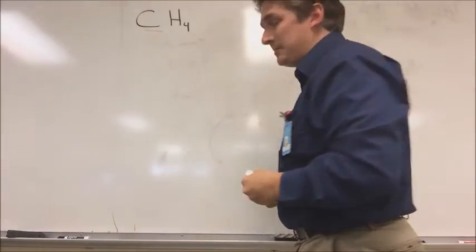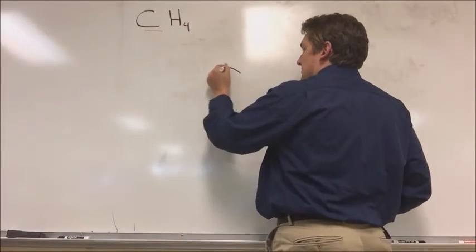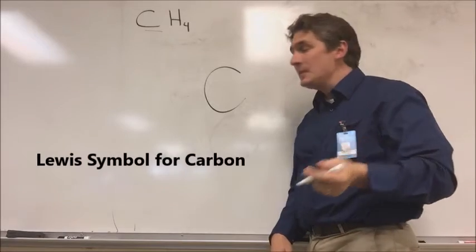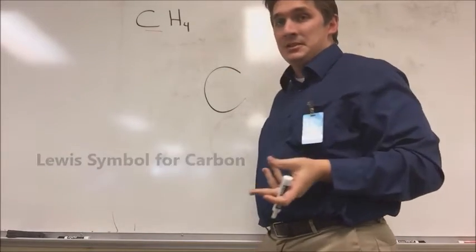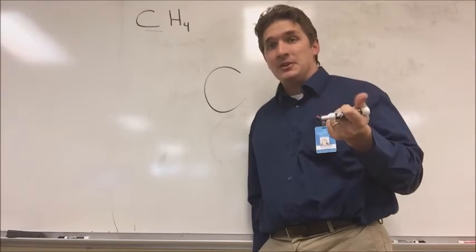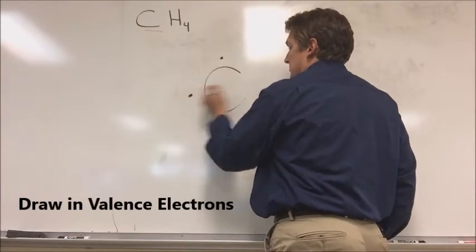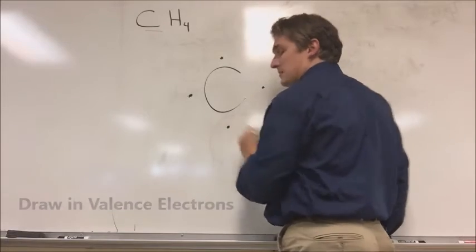Now we draw a Lewis structure. We're going to draw it out by drawing the chemical symbol for what's going to be our central atom, in this case, carbon. And we need to put in the correct number of valence electrons. For carbon, this is going to be four, because the valence electron configuration is 2s2, 2p2. So we have one, two, three, four electrons.